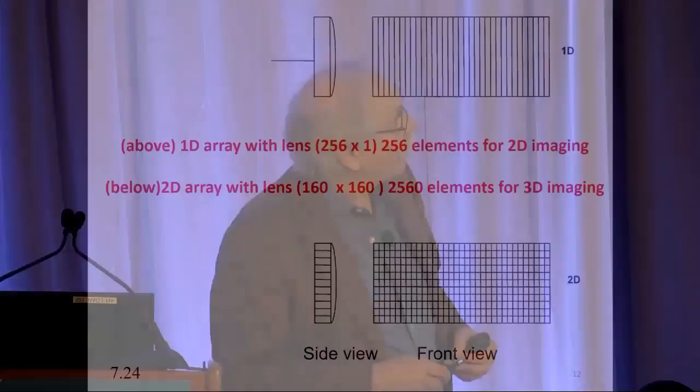3D ultrasound is increasing in usage. A one-dimensional array gives a two-dimensional image and might have approximately 128 or 256 elements. A matrix array is what you need for three-dimensional imaging. Unfortunately, this has an order of magnitude more elements, so for many years this was prohibitive in terms of realizing a true three-dimensional imaging system.